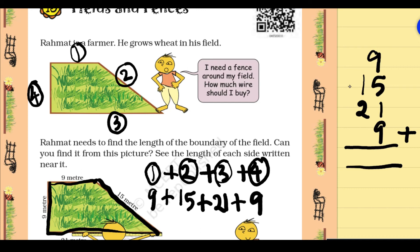9 plus 5 is 14. 14 plus 1 is 15. 15 plus 9 is 24.